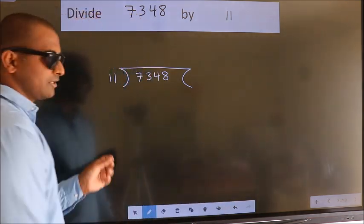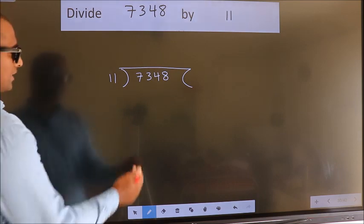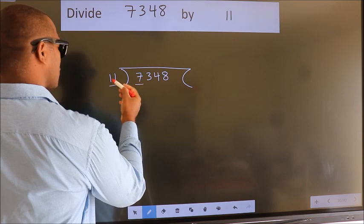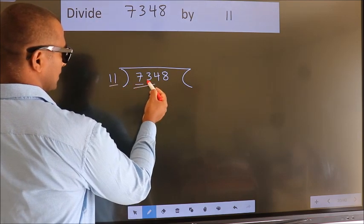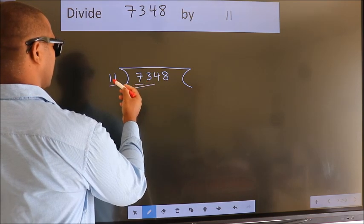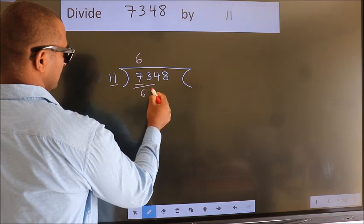This is your step 1. Next, here we have 7. 7 is smaller than 11, so we should take two numbers: 73. A number close to 73 in the 11 table is 11 times 6, which equals 66.